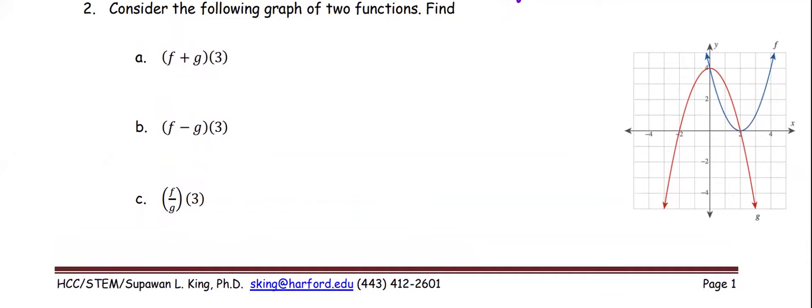In this example, consider the following graph of two functions, and then find in part A the sum of f and g at 3, part B the difference of f and g at 3, and part C the quotient of f and g at 3.